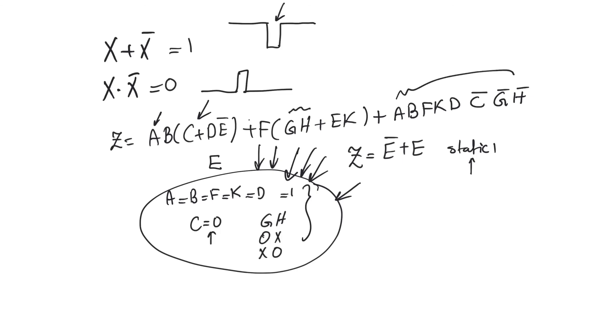Now, this additional term solves the static hazard at the core because it forces the function to be 1 if E is equal to 0 or E is equal to 1 for this combination of the other variables.